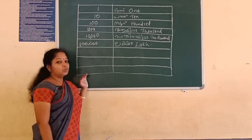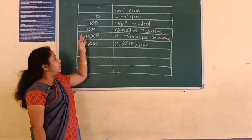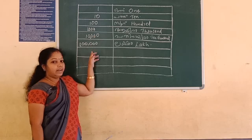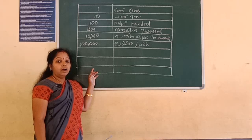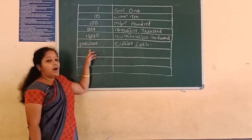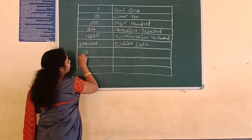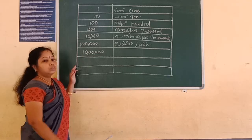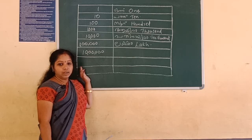Yes, let's go to the smallest seven digit number. This is one, ten, hundred, thousand, ten thousand, one Lakh. One Lakh. Okay, and one with six zeros. So, this is the smallest seven digit number.